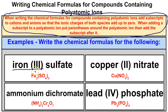For iron(III) sulfate: iron(III) is Fe with a 3+ charge, and sulfate is SO4 with a 2- charge. These don't add up to zero, so we add a subscript of 2 to iron and a subscript of 3 to sulfate. We put parentheses around the polyatomic ion before adding the subscript of 3. Three times 2- is 6-, and two times 3+ is 6+, so now the ionic charges add up to zero.